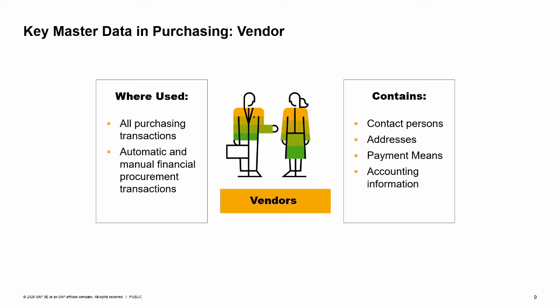The vendor master also contains payment means and other accounting information. You can search for the appropriate vendor in any purchasing document. If you are authorized, you can also enter new vendor information while creating a purchasing document.